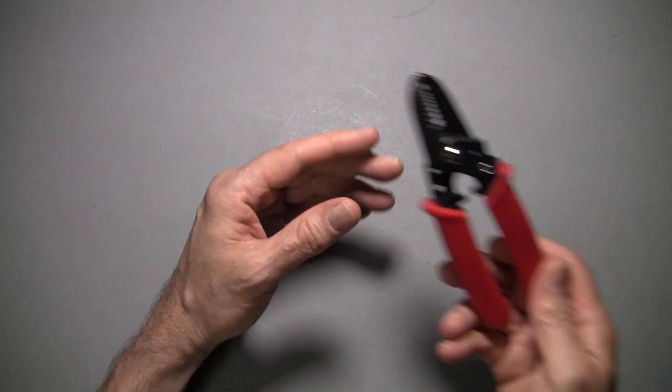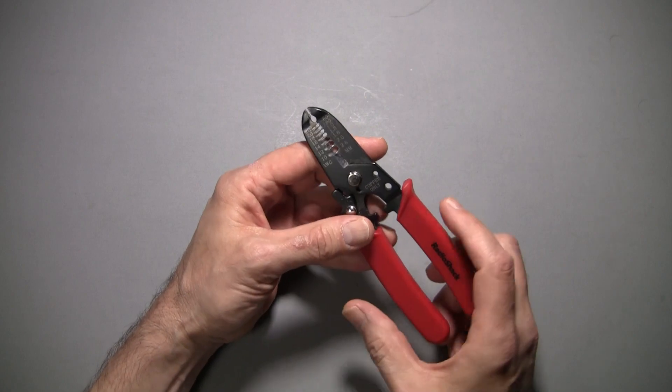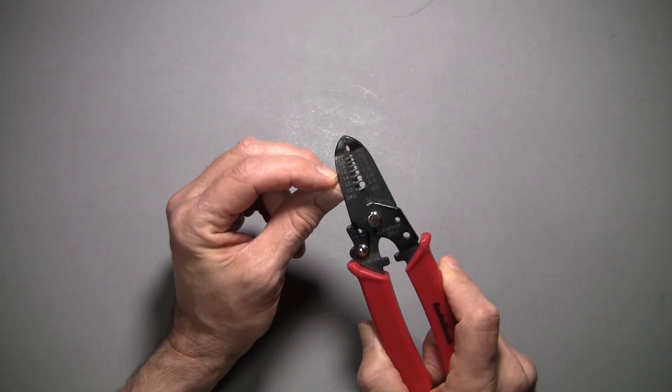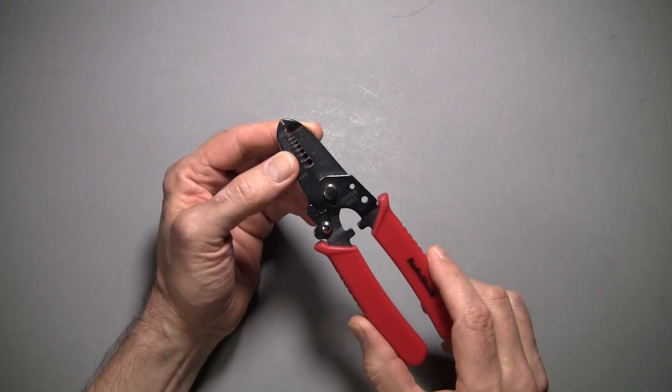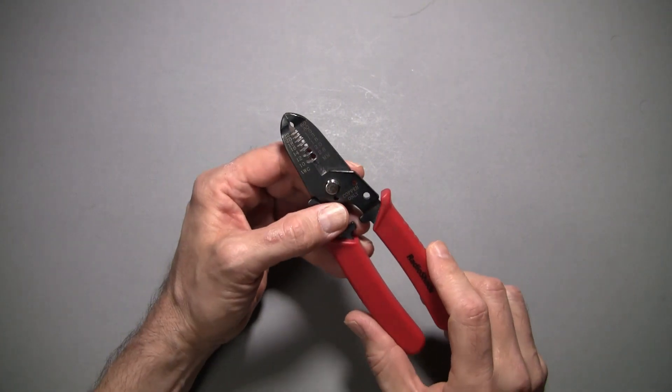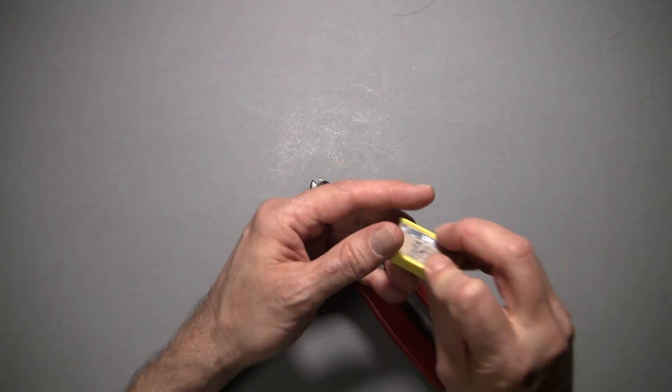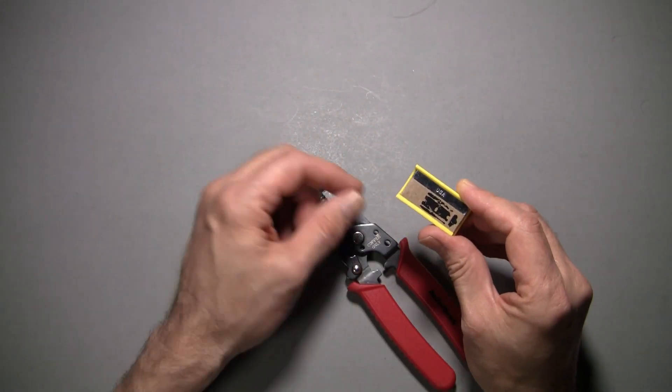And so for that reason, I would recommend that maybe you try these. These have preset slots for the different sizes of wire. The one thing is these will not be able to cut the big outside jacket on a wire, so you're going to need some single edge razor blades.